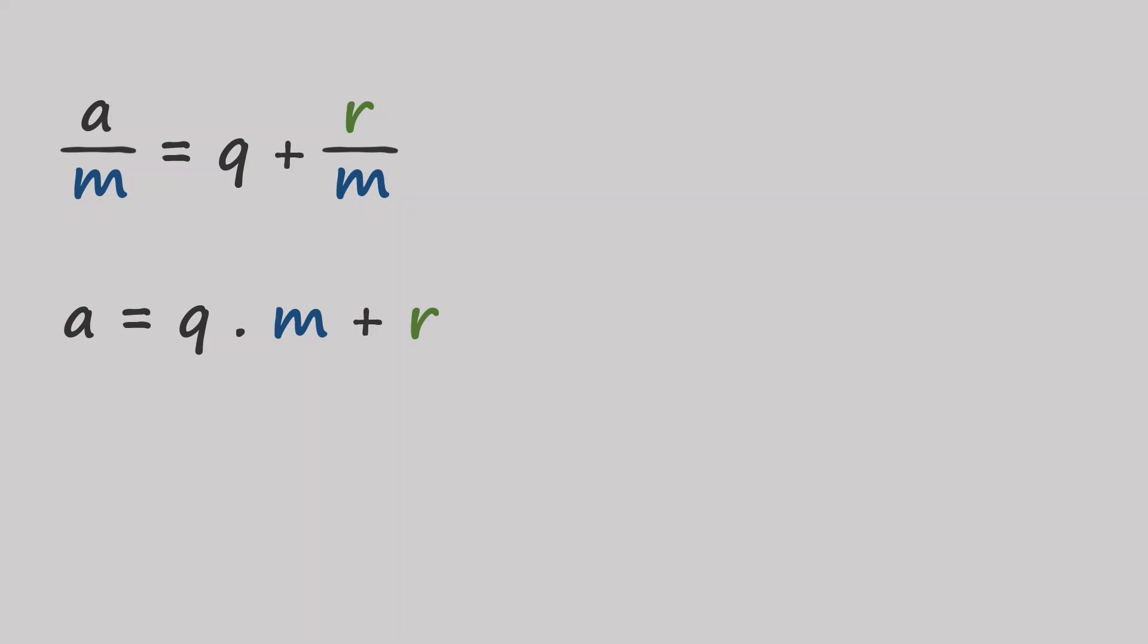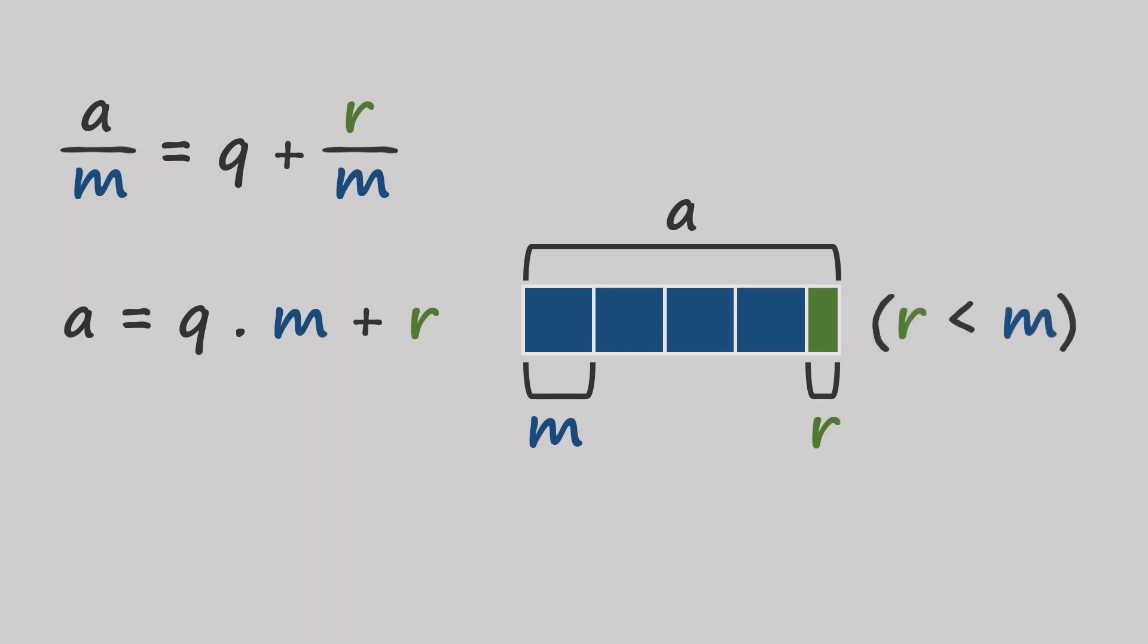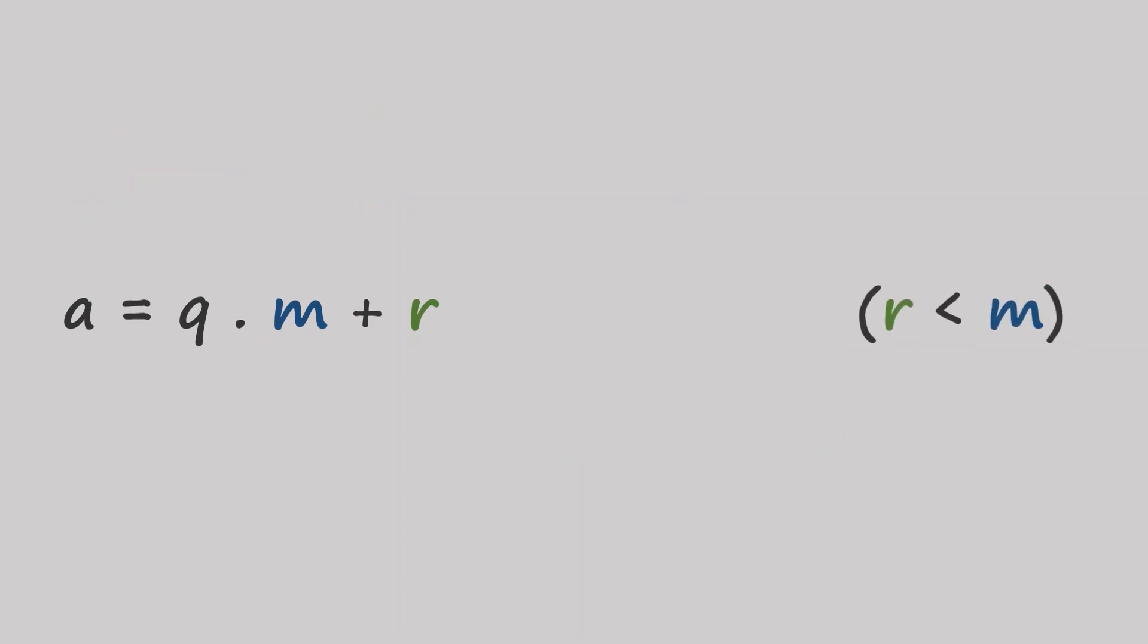This is basically saying that a is composed of q copies of m plus some remainder. And that remainder is less than m. And if that remainder is zero, then m divides a perfectly.